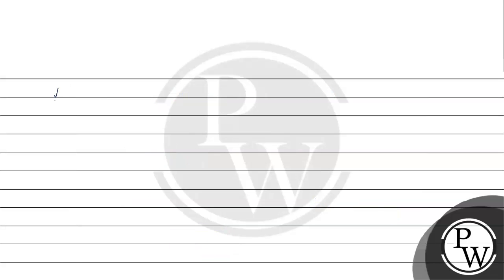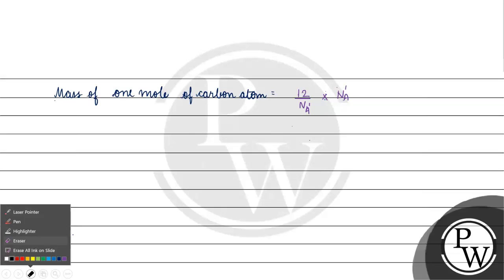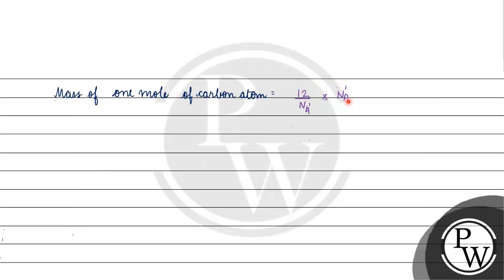Now, the mass of one mole of carbon atoms — it will be 12 by Na' multiplied by Na' (the number of particles in one mole). The mass of one carbon atom is 12 by Na', and this is the number of carbon atoms. We multiplied the mass of one carbon atom by the number of particles in one mole. Na' and Na' cancel out, and what remains is twelve.